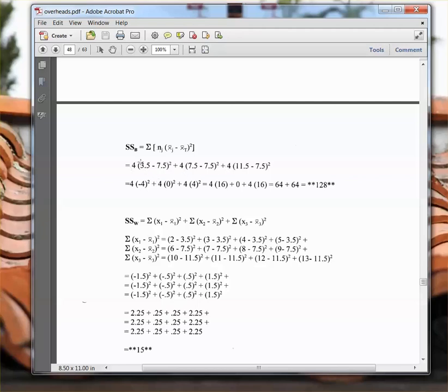So the group mean for the first group was 3.5. Substituting in there, that's the grand mean, 7.5. 7.5 was the second group mean, grand mean. 11.5 was the mean of the third group, grand mean. So now, it's just a matter of reducing this down.